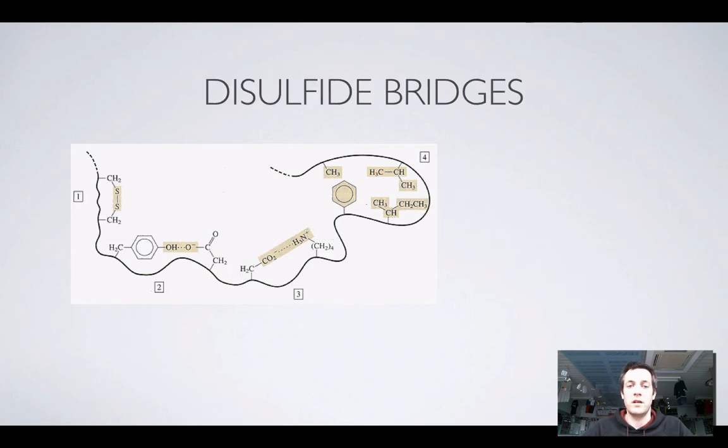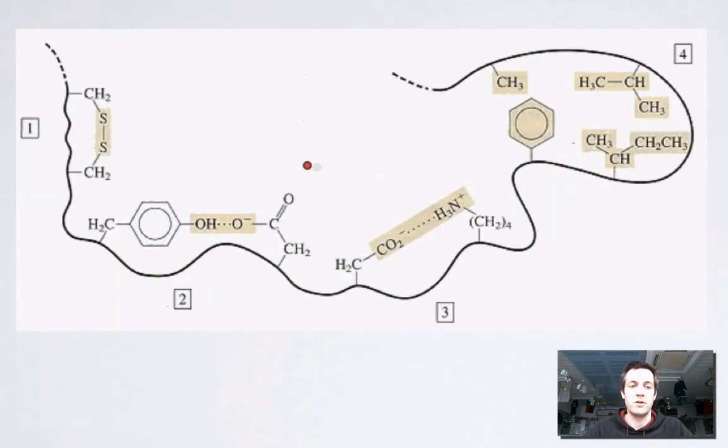What else could we have? Well, we could have things called disulfide bridges. Now you've heard of hydrogen bonds and ionic bonds before, but disulfide bridges might be new to you.